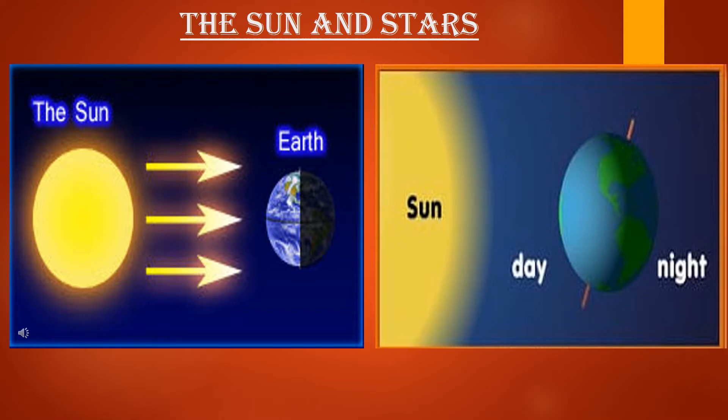Without the Sun there would be no daylight on our planet, because all the planets have no light and heat of their own. For us living on planet Earth, we have no other source of heat and light — the single source of heat and light to the Earth is the Sun. It is also a star, and it gives us heat and light.